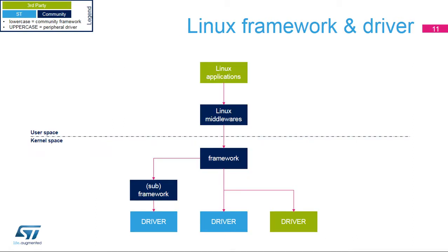This slide gives a high-level overview of how a Linux system is organized. On the user side, applications usually rely on middleware to invoke the Linux kernel. Linux drivers are not directly exposing their API to user space; instead, they are registered to frameworks that themselves expose unified APIs to user space. The framework concept is very important because it ensures that an application working on a stable framework API will also work on a future Linux kernel version and on other platforms implementing other drivers. Some frameworks may even have sub-frameworks — for instance, SD card support is a sub-part of the MMC framework.